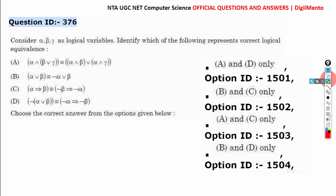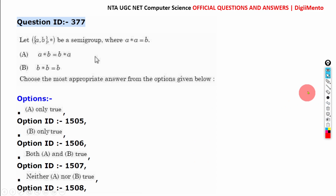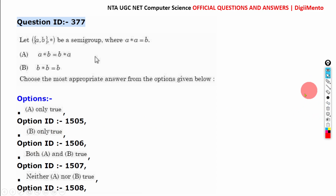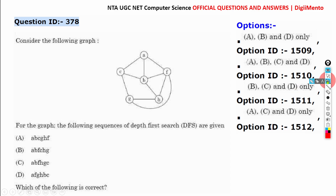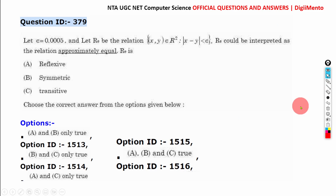Question 376, the correct answer is C. Question 377, it is C. Question 378, the answer is D. Question 379, the correct answer is A.